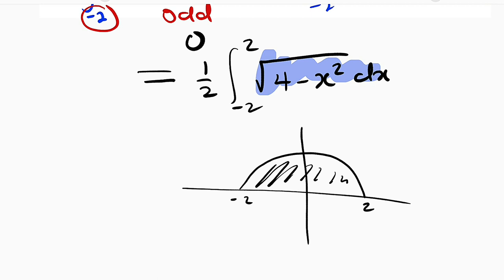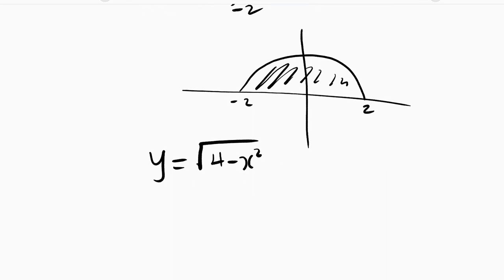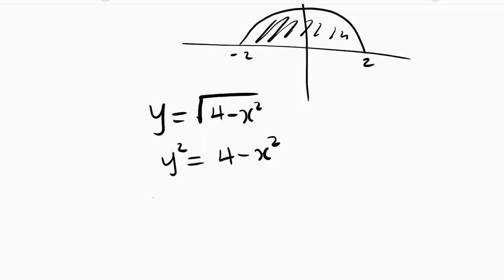But let me just confirm it for you. Let y equal to square root of 4 minus x squared. If you square both sides you have y squared equal to 4 minus x squared. We have y squared plus x squared equal to 4, which can be written as 2². And this is just an equation of a circle from origin with a radius 2.